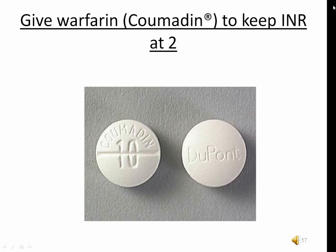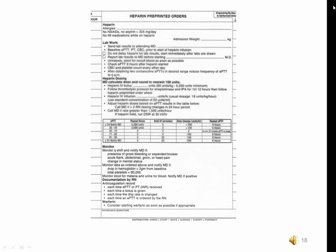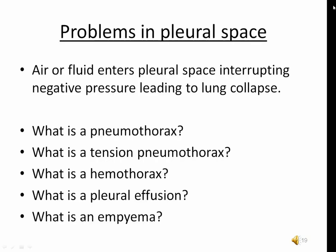The heparin or enoxaparin must be continued until the pro-time INR reaches a therapeutic level. Since it takes about five days for Coumadin or warfarin to start working, the patient will need a heparin drip or Lovenox shots in the interim. The normal INR is one; you want your patient with a clot to have an INR of about two to be considered therapeutic — meaning it takes blood twice as long to clot. According to Kaiser's anticoagulation protocol, the heparin drip is decreased when the anti-Xa factor is too high and increased when too low, to prevent further clot formation without causing excessive bleeding.